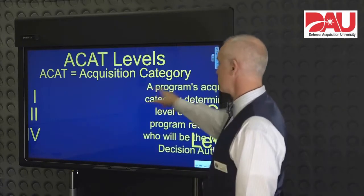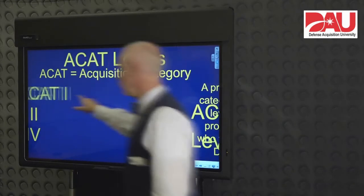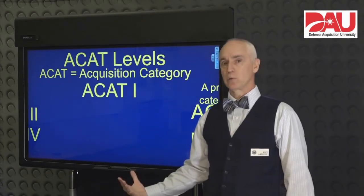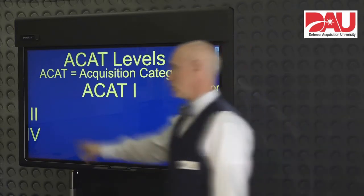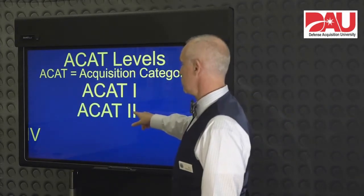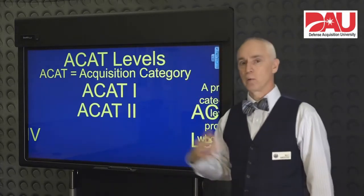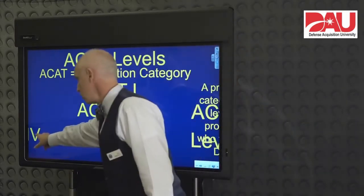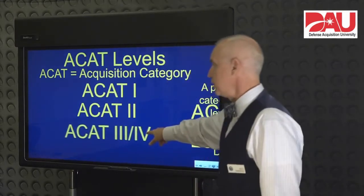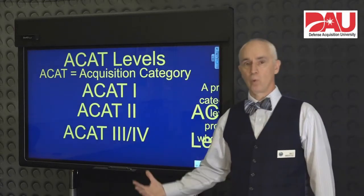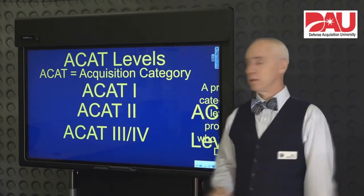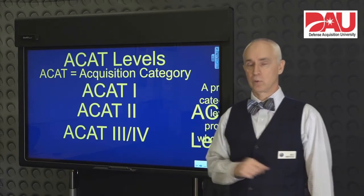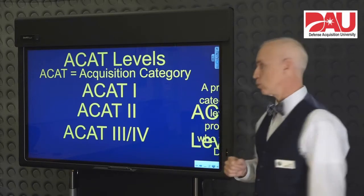So let's talk about which ones there actually are — we've got several different levels. Your biggest programs are going to be acquisition category one; your major defense acquisition programs are acquisition category one. Your major systems are acquisition category two — slightly smaller but still very important. Your smallest programs are going to be in acquisition category three or four, depending on how small they are and whether you're in the Marine Corps, Army, or Navy, which are the only services that actually use acquisition category four.